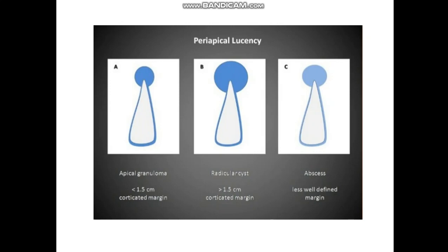We have to differentiate radiographically between three pathological conditions associated with the apex of the tooth. If there is well-demarcated radiolucency associated with the apex and its size is less than 1.5 cm, the possible diagnosis could be Periapical Granuloma. But if the well-demarcated radiolucency is more than 1.5 cm, the possible diagnosis could be Periapical Cyst. In the case of abscess, there is no well-demarcated border of radiolucency because it is an abscess, so there is bone destruction but no well-demarcated line.